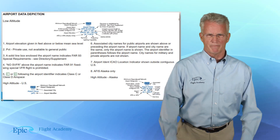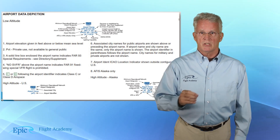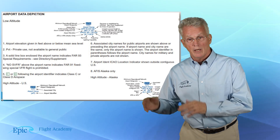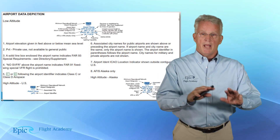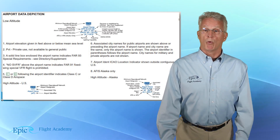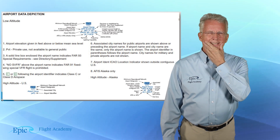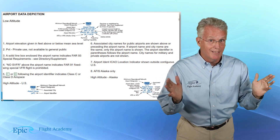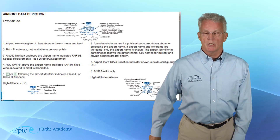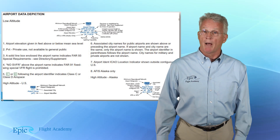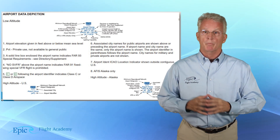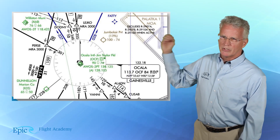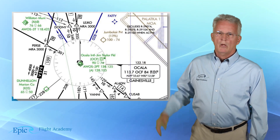Airport data shown here is very similar to what you've seen on sectional charts, with only some minor differences. One difference is the C or D following the airport identifier to denote Class C or D airspace. You might also see MON over the airport name — that means the airport is part of the Minimum Operational Network. Review that with your CFII.